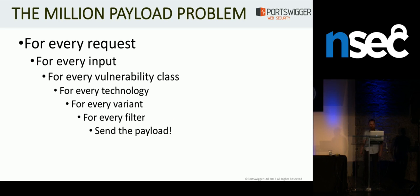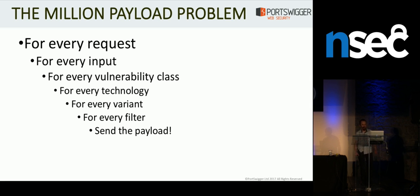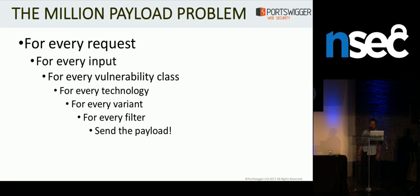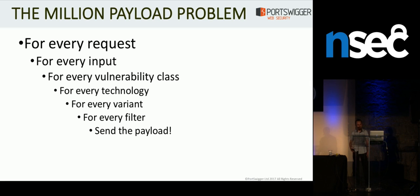The million payload problem is that simply put, all of those payloads I've shown a scanner can send — but that's a tiny number of the potential payloads you have to send to find every vulnerability class with every kind of filter, variant, or technology. And if you try all of that per request, then you'll be sending over a million payloads per base request and you'll never finish scanning anything. So scanners are forced to send best-effort payloads that just work most of the time. And that is what leads to people saying that scanners are good for finding low-hanging fruit, which is a statement that breaks my heart. What we deserve is a scanner that finds high-hanging fruit.